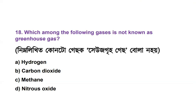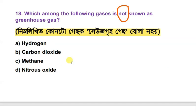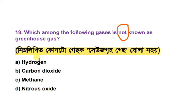Which among the following gases is not known as a greenhouse gas? The options are hydrogen, carbon dioxide, methane, and carbon dioxide hydroxide. The answer is hydrogen — hydrogen is not a greenhouse gas.